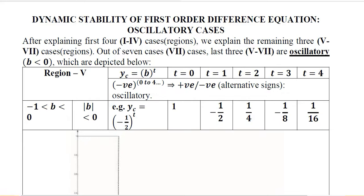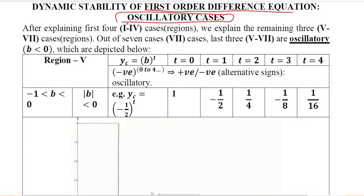After discussing the non-osculatory cases of the dynamic stability of first-order difference equations, it is time for us to study the osculatory cases. The first four cases have already been studied in the last video. These are the last three cases — the fifth through seventh — and they will be osculatory in nature. The value of b will be less than zero, because whenever b is negative, there will be an osculatory pattern.